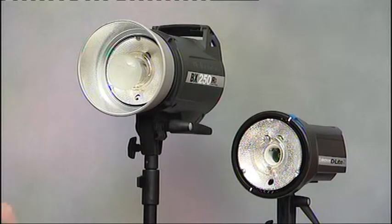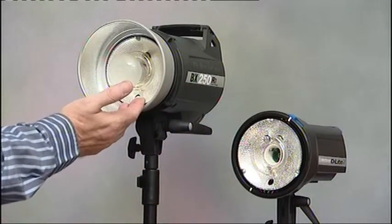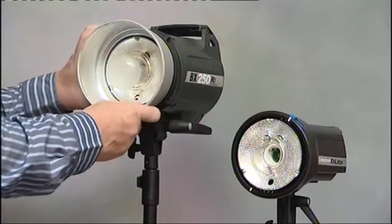So now let's look at the front of two different flash units, an Elinchrom D-Lite and the BXRI. You can see straight away that the flash tubes are quite different.